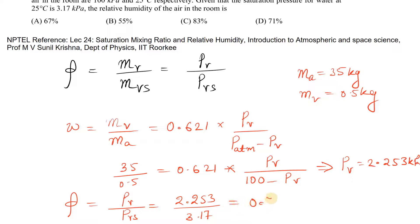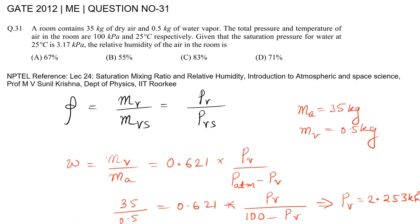This equals 0.71 or 71 percent. So the relative humidity of the air in the room is 71%.